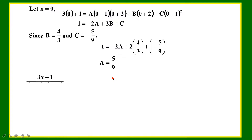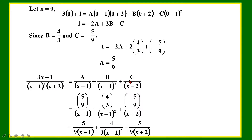Once that is done, I put all the constants I found back into the partial fraction equation. The place for a, I substitute 5 over 9. The place for b, I substitute 4 over 3. The place for c, I put in negative 5 over 9. But this form is a bit untidy, so I am going to bring the 9 back down as the common denominator. This gives the final answer.